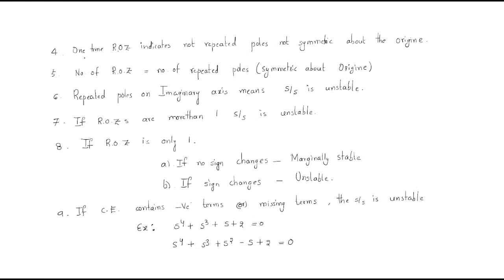Point four: one occurrence of a row of zeros indicates no repeated poles and no symmetric poles about the origin. So one ROZ simply means there is no repetition of poles and the poles are not symmetric above the origin.